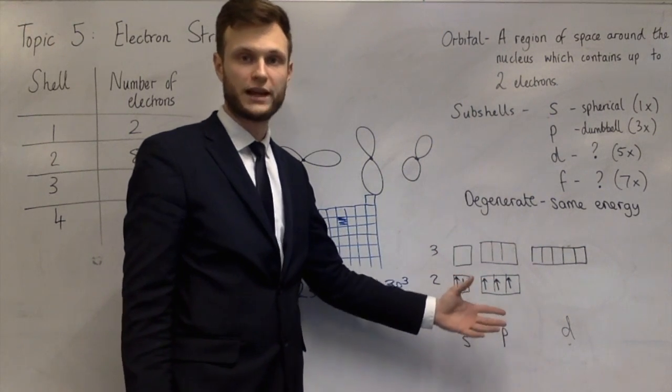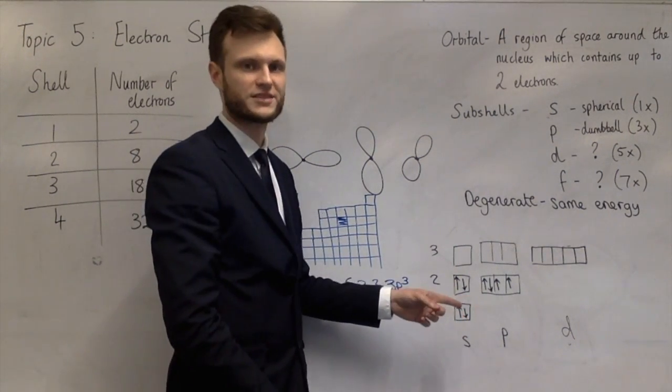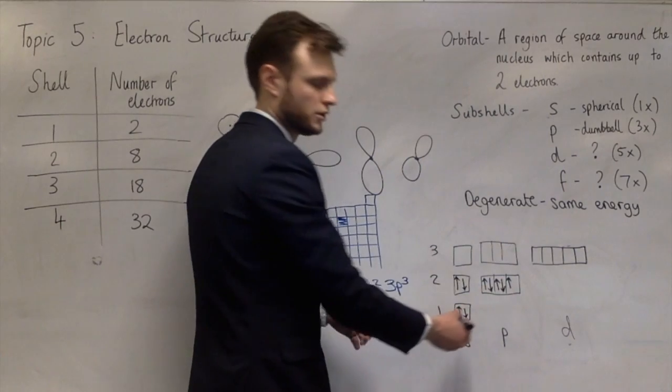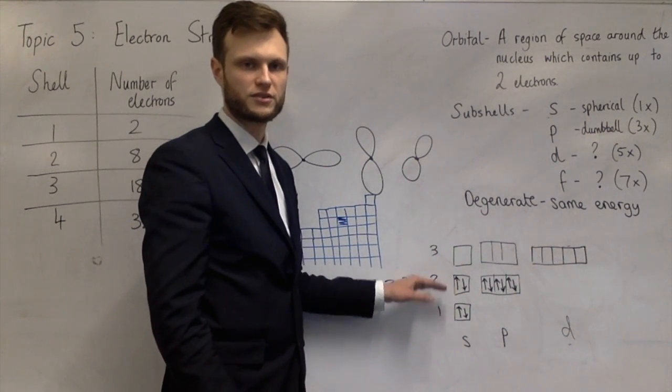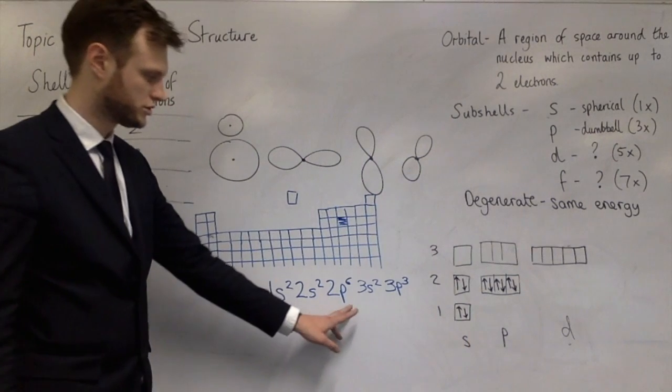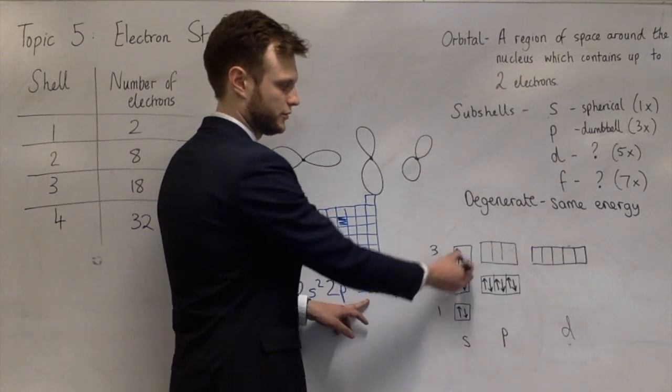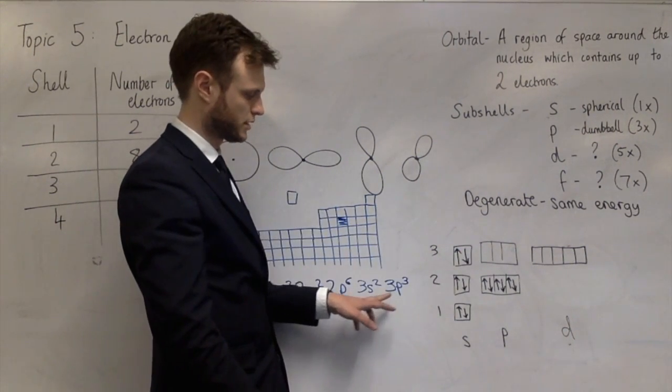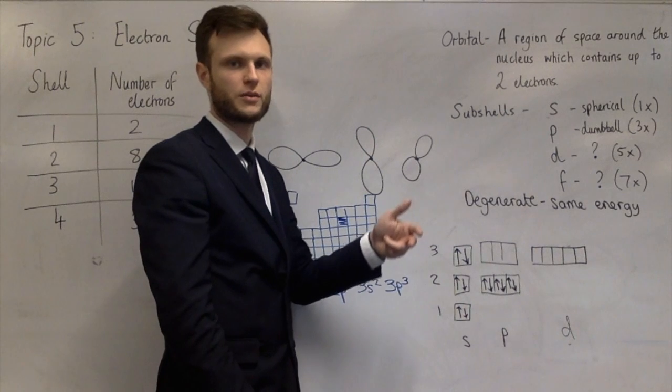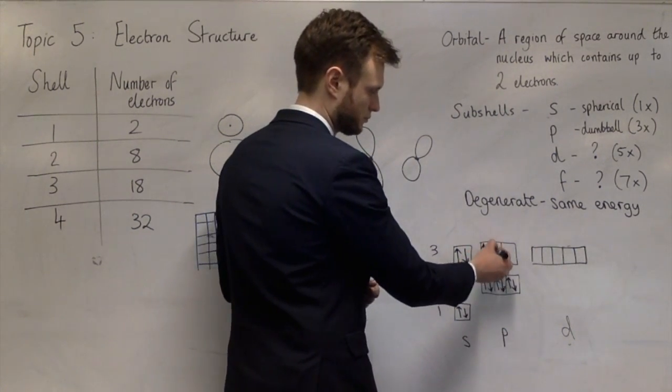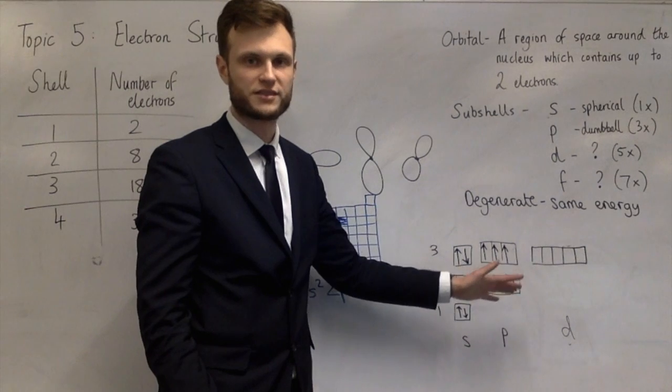Once you get to the fourth electron in the P-subshell, it has to start pairing up with one of the previous electrons. Remember, it's a down arrow. The fifth electron, also a down arrow, and the sixth electron. So this is the first two shells filled. So we've reached 2P6. Next is 3S2. So you get an up arrow and a down arrow in 3S2. And then finally, the 3P electrons, the three electrons to go into the 3P-subshell. Remember, they go into one of each of the orbitals before they start pairing.